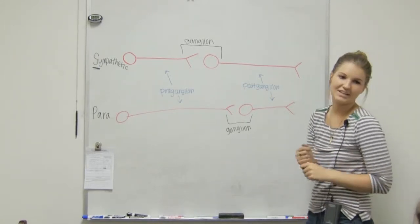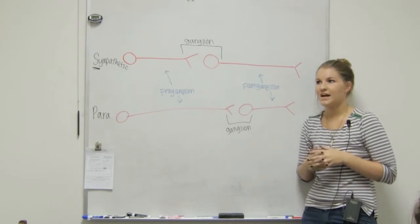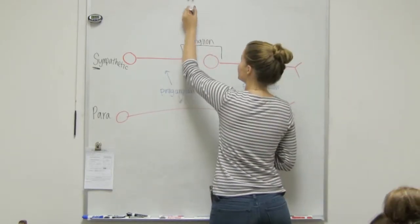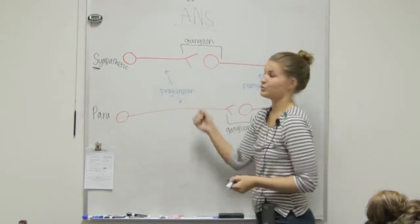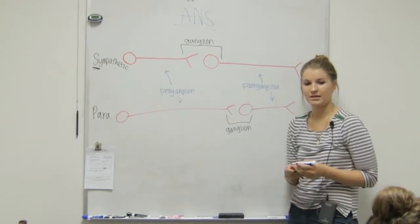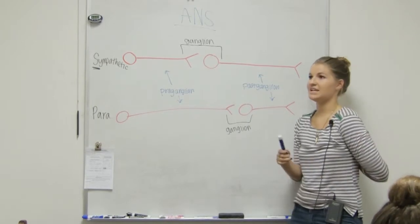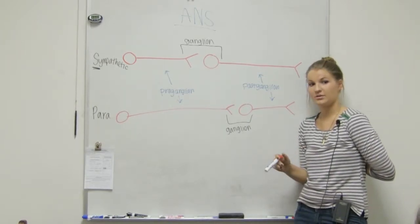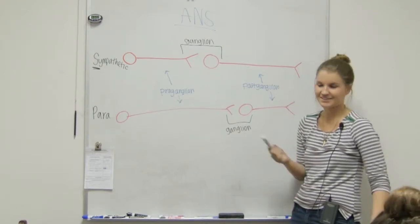Okay. So a guaranteed test question. Which division of the ANS, so this is the ANS autonomic nervous system, is composed of sympathetic and parasympathetic. So which division of the ANS has a short preganglionic and a longer postganglionic? Sympathetic. Sympathetic. Awesome.